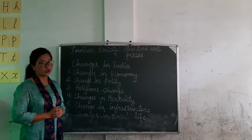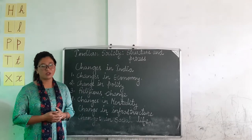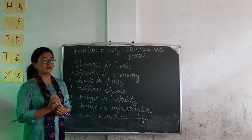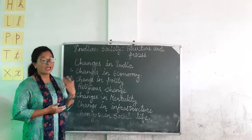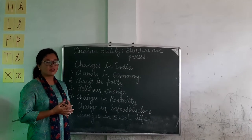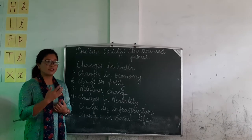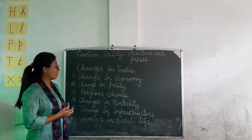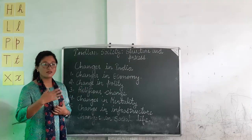Number one: changes in economy. Earlier, agriculture was the main occupation of the people, and people were self-sufficient. Later on, agriculture was no longer the only occupation. People started producing more crops, cultivating in different ways, using different fertilizers. The Indian economy was not the same — changes were taking place.